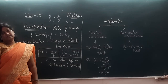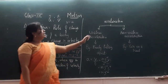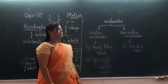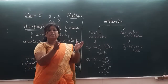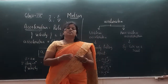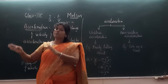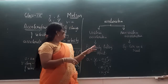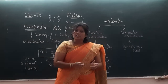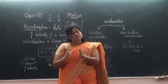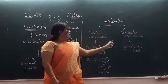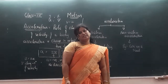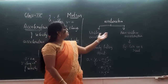As we studied uniform and non-uniform motion, in case of acceleration also, children, we have uniform acceleration and non-uniform acceleration. You know what is uniform velocity — if the object covers equal distances in equal intervals of time it is uniform velocity. Similarly here, if a body is moving with velocity changing equally in equal intervals of time, then it is uniform acceleration. If not, it is non-uniform acceleration.